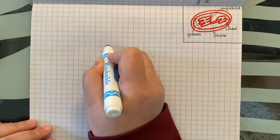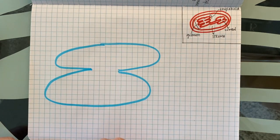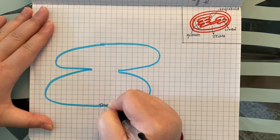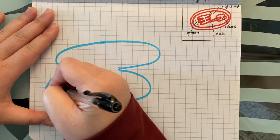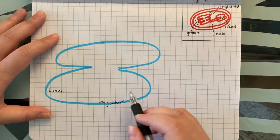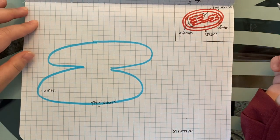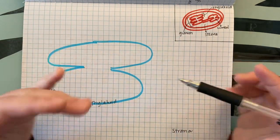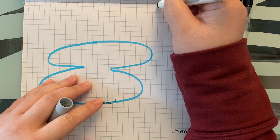We'll draw a two-thylakoid granum. One single disc is a thylakoid, the inner fluid of a thylakoid is the lumen, and the fluid outside the granum and thylakoids is the stroma. The light reaction occurs along the thylakoid membrane, and the Calvin cycle occurs out in the stroma. We'll divide these two steps with a line — anything drawn across it moves from one cycle to the other.